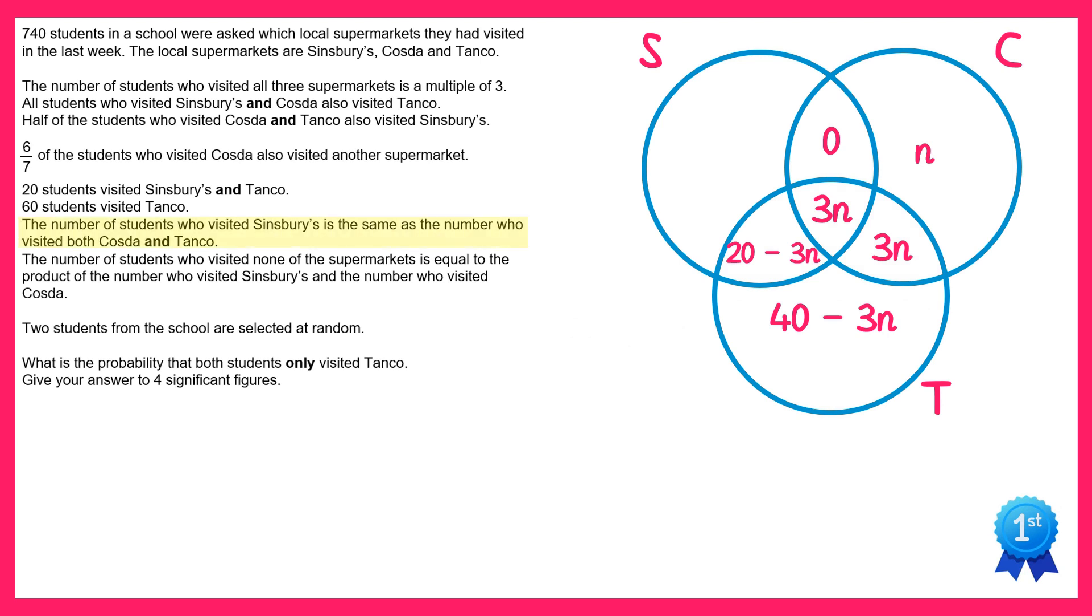Now we're told the number of students who visited Sinsbury's is the same as the number who visited both Cozda and Tanko. The number who visited Cozda and Tanko is 3n and 3n, so that makes 6n, so the whole of the Sinsbury's circle must add up to make 6n.